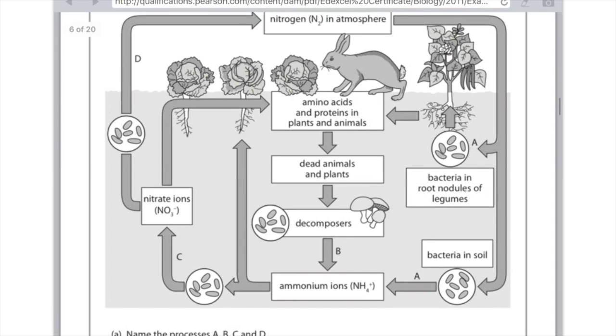For C, what we can see is that ammonium ions are being transferred into nitrate ions. Remember the name of the bacteria which does that is nitrifying bacteria so write the process of nitrification here. You could write nitrifying, that's going to be fine too. And then D,